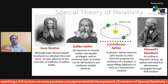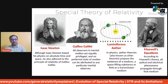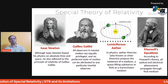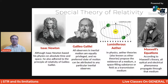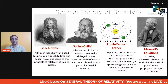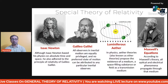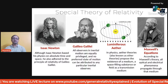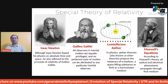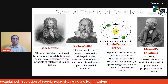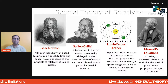Here is a chronology of events. Although Isaac Newton based his physics on absolute time and space, he also adhered to principles of Galilean relativity. Galilean relativity tells us that all observers in inertial motion are equally privileged. There was also the concept of the luminiferous ether — an unknown substance through which gravity, electricity, and magnetism were thought to permeate and travel.